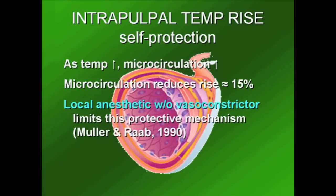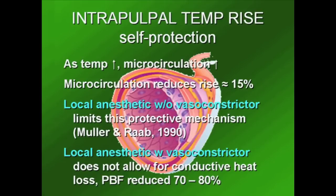If a local anesthetic is applied to this area, then the vessel's ability to sense and respond to the thermal change is negated. In addition, if a vasoconstrictor is used in conjunction with a local anesthetic, then not only is the thermal protective mechanism inhibited, but the pulpal blood flow, which would have helped to bring in new cooler fluids, is greatly reduced.